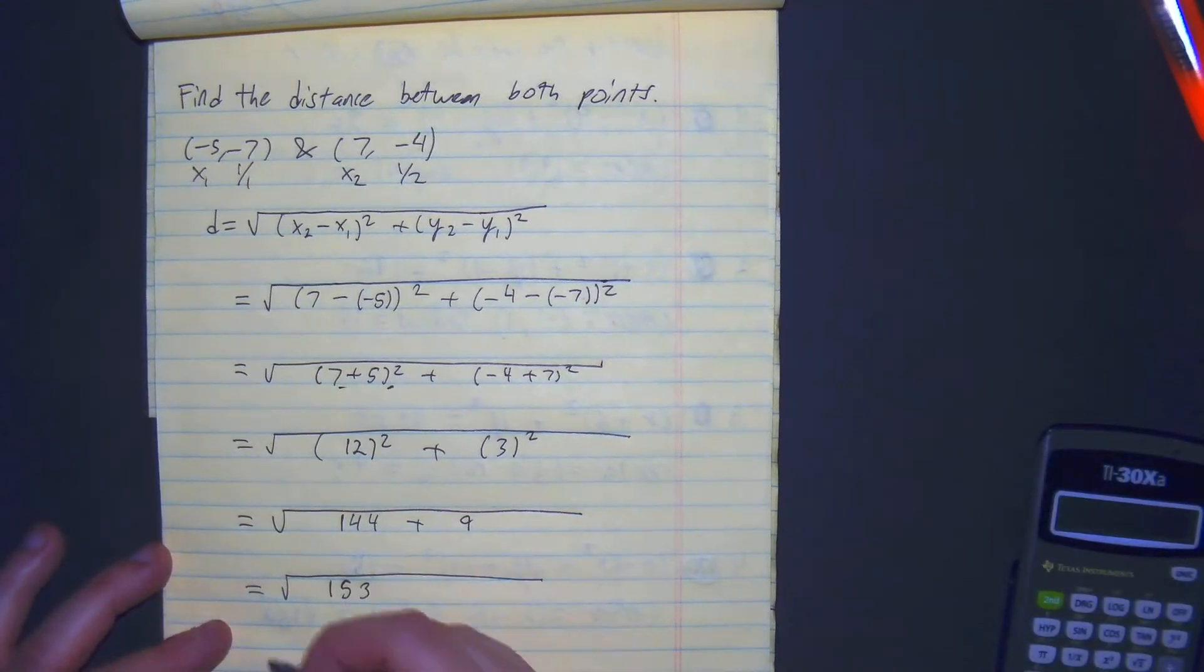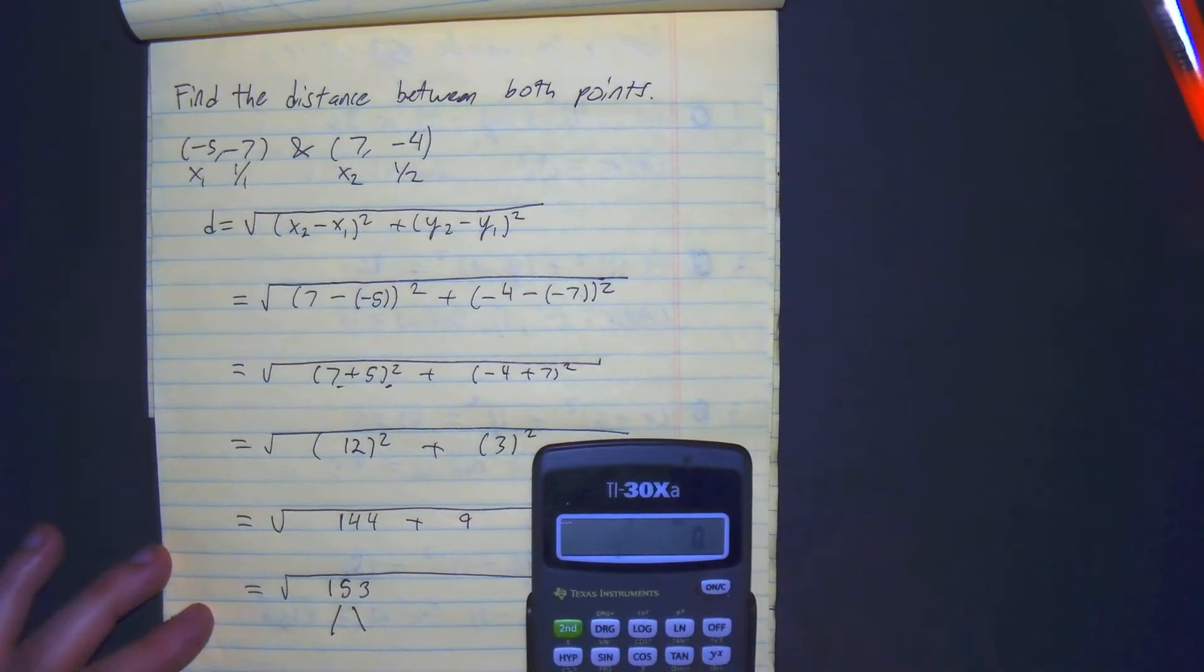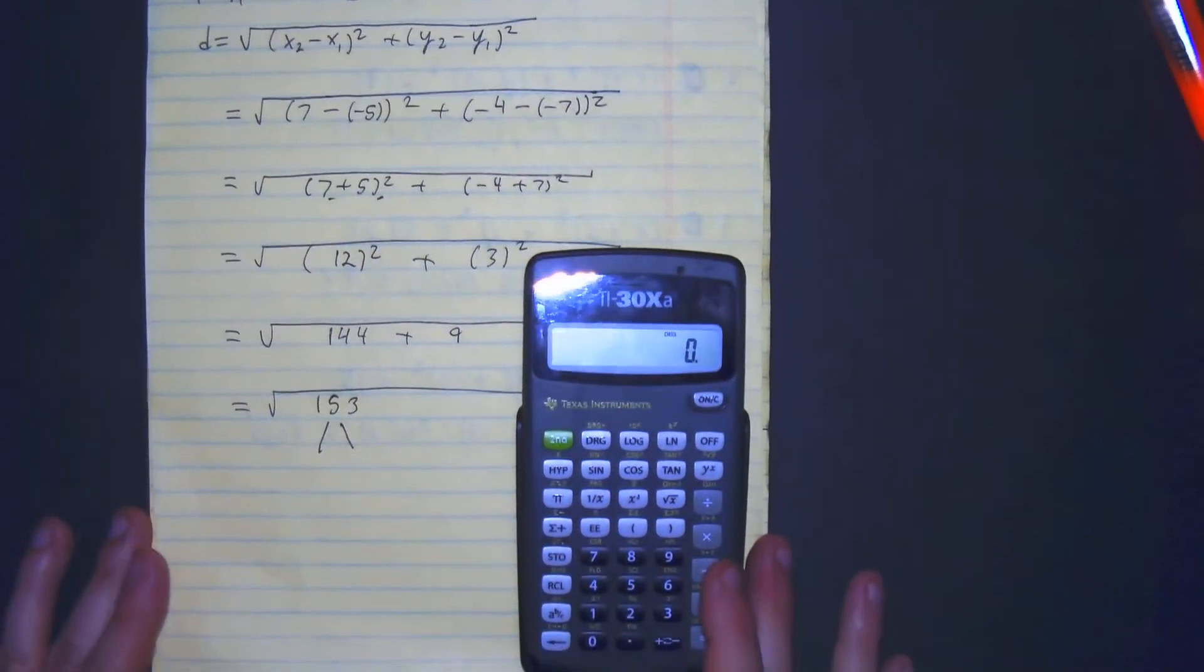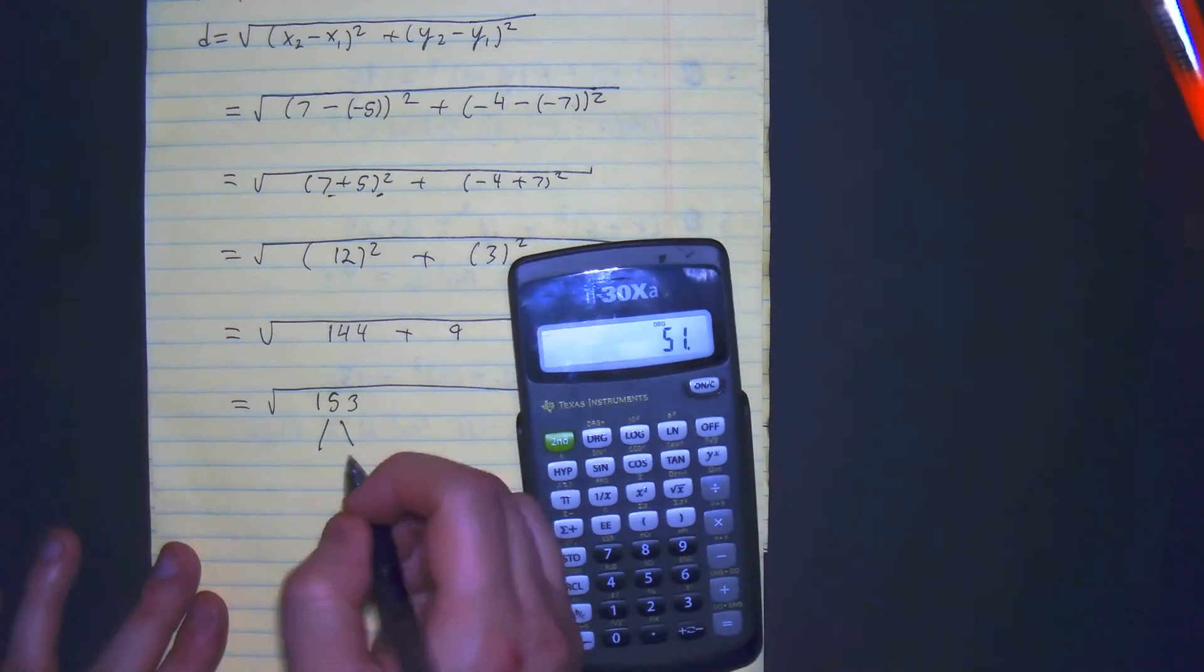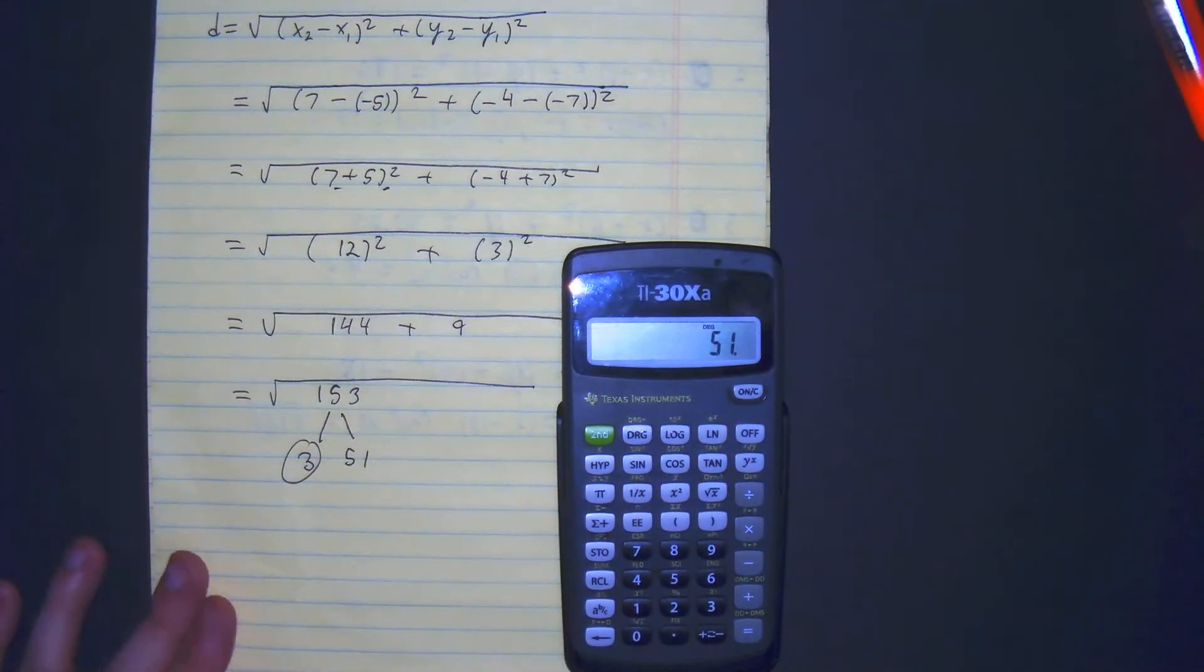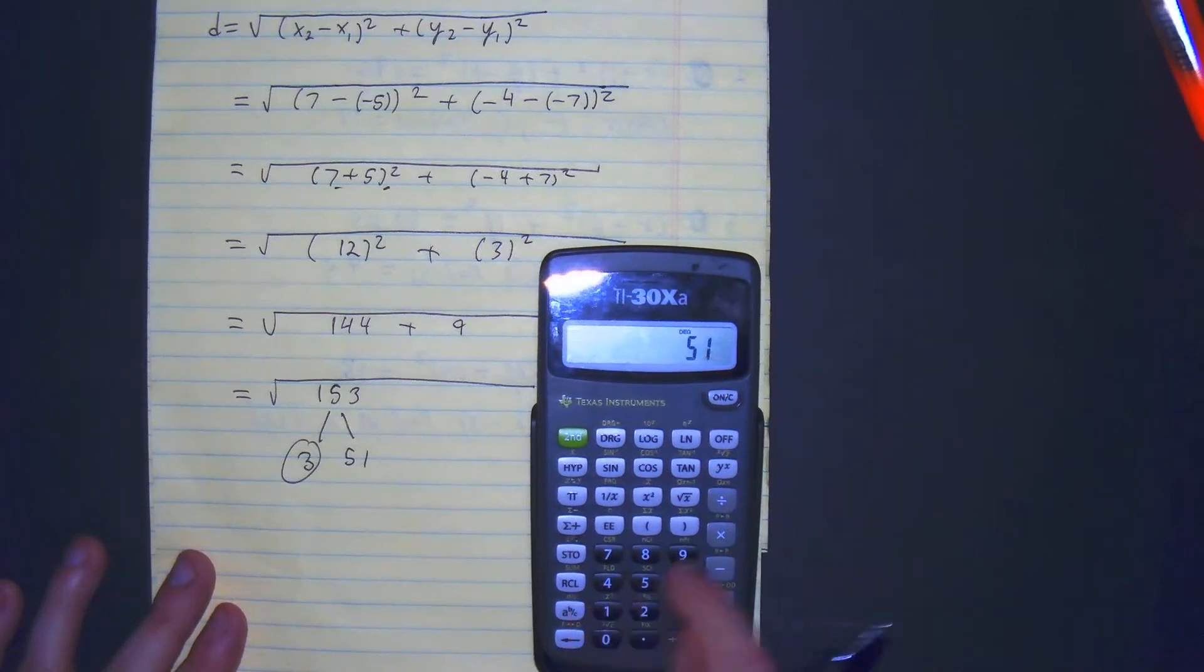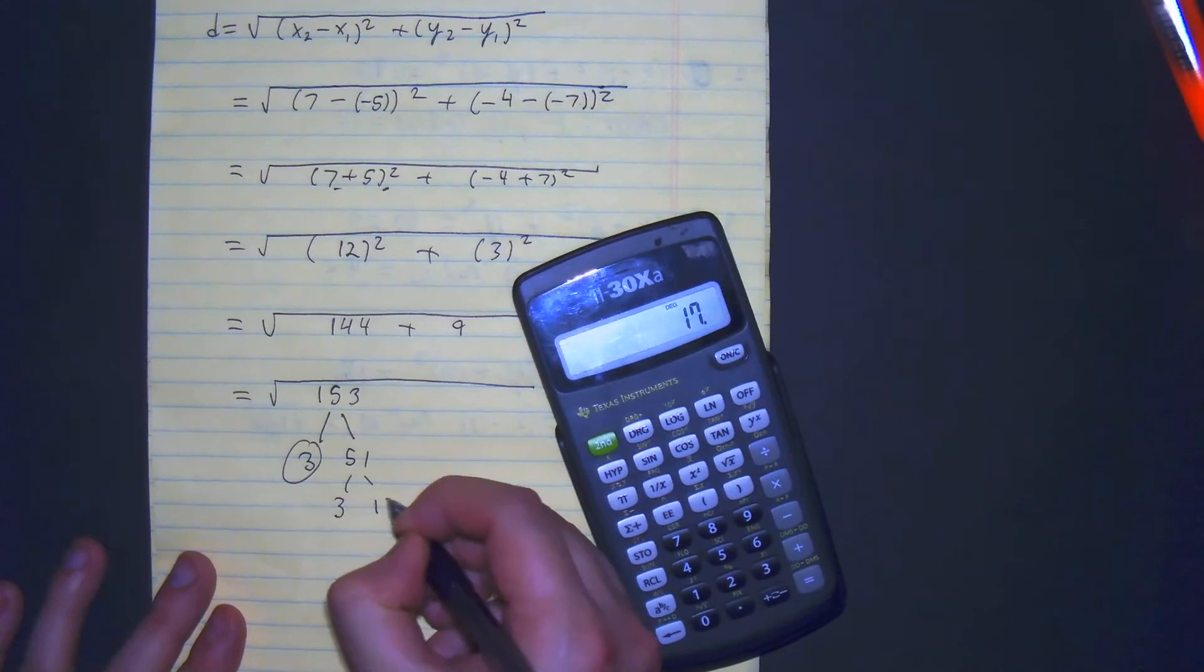So 153, we can break our 153 down using our factor tree. 153 divided by 3 gets you 3, 51. And remember, we're just breaking it down because 3 times 51 equals 153. We're just breaking it down to its prime numbers. And then 51 divided by 3 gets you 3 and 17.